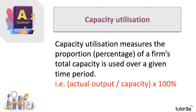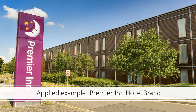which actually gets used up over a given time period. So we take the actual output, divide by the total capacity, multiply by 100 to get a percentage capacity utilization. Now, as a rule, a fall in capacity utilization will lead to an increase in a firm's unit costs — average costs — particularly because many businesses have a high level of fixed costs in the short run.